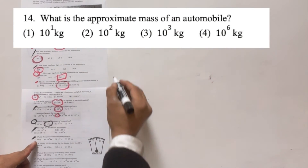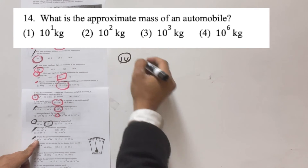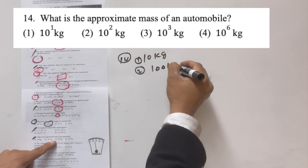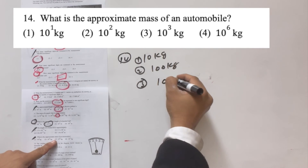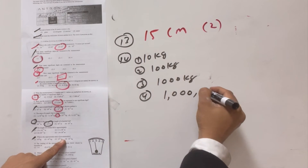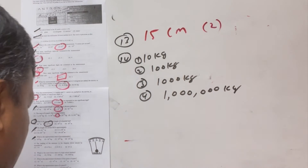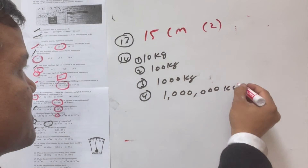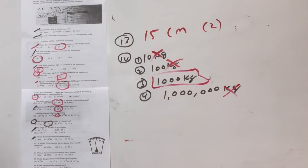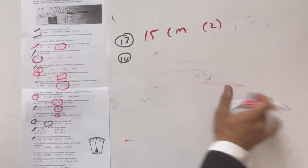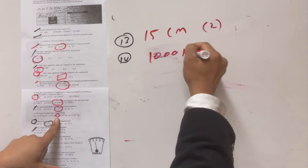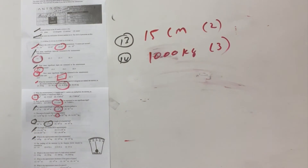Number fourteen: the approximate mass of an automobile. Options are 10 kg, 200 kg, 1000 kg, and 1 million kg. A small Toyota is about 1000 kilograms, so the answer is 1000 kg — option number three.